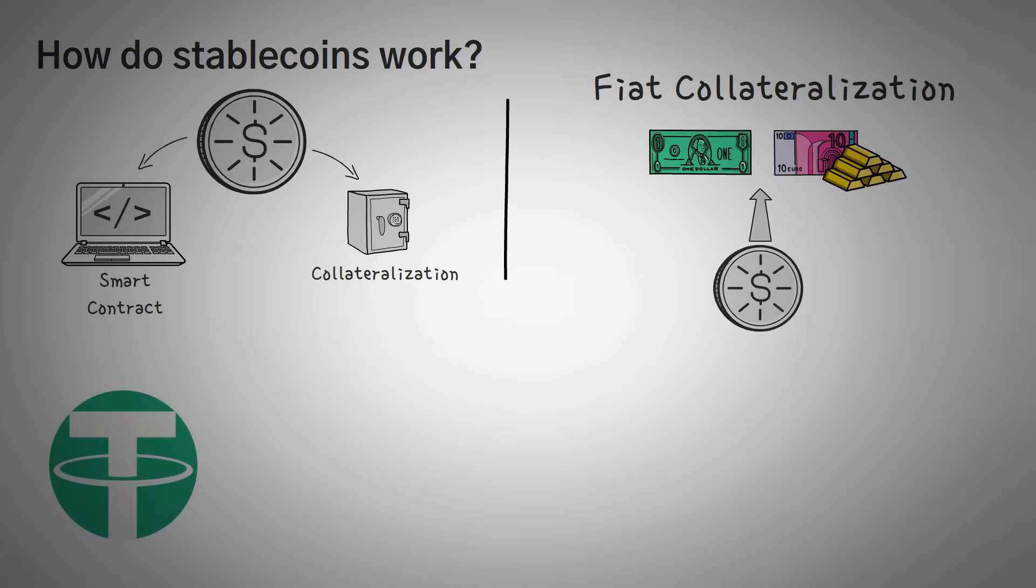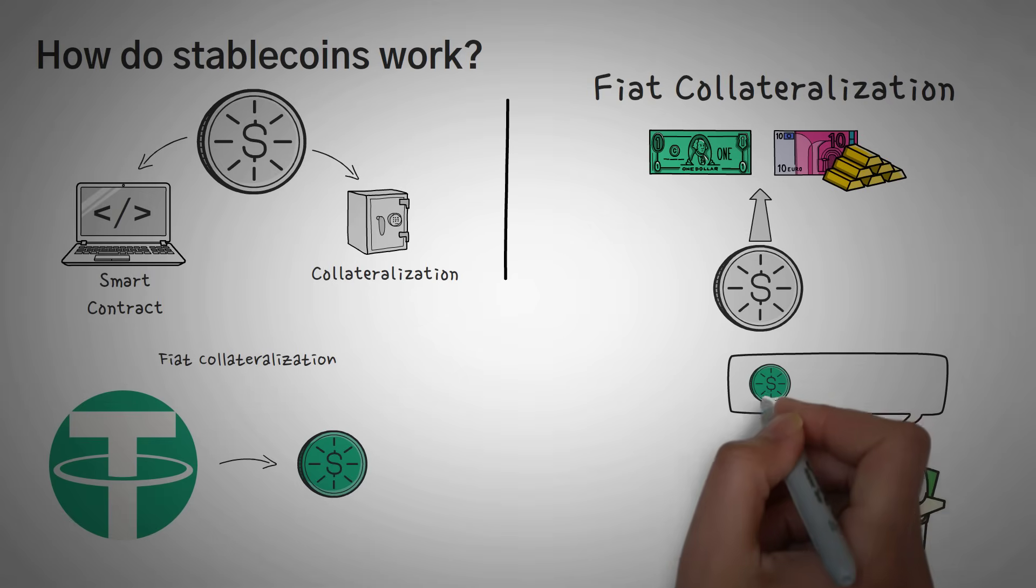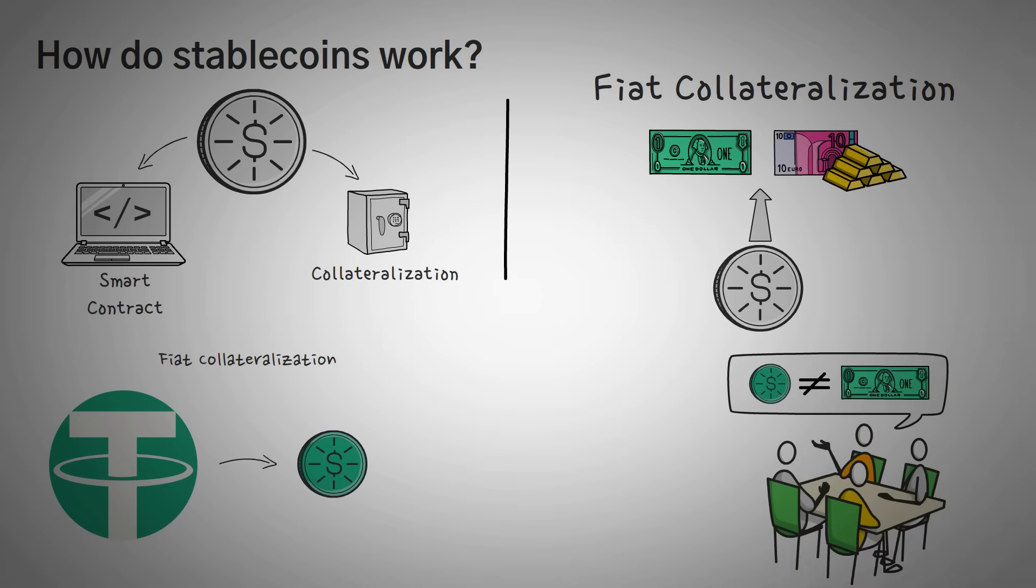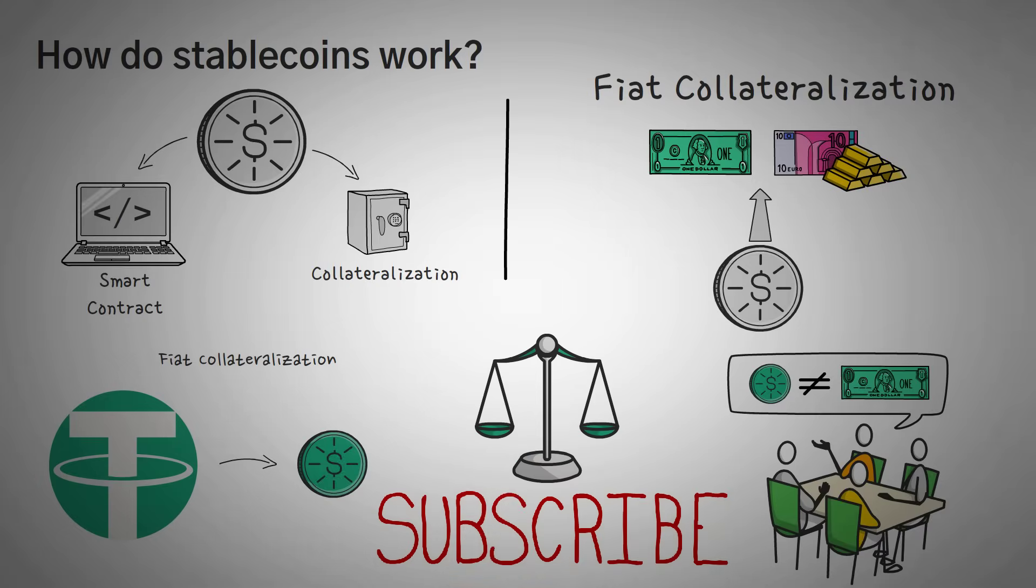Tether is, in fact, one of the most major companies that released their USDT stablecoin using fiat collateralization. Now, there are some rumors that they do not have a dollar for every USDT that they have minted. Kind of like there's rumors like you haven't subscribed yet. But we'll get onto that later. The pros of a fiat collateralized stablecoin is that they are quite stable, much more than the alternative.